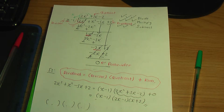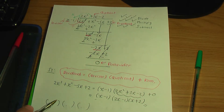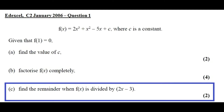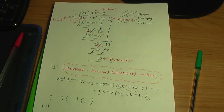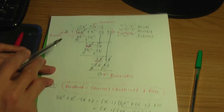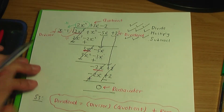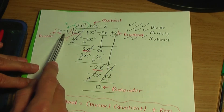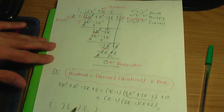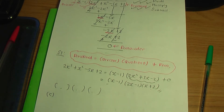If you're unfamiliar with the method, I'll provide a link to a video on this in the description below. That solves Part B. In Part C: find the remainder when f of x is divided by 2x minus 3. You can either use algebraic division or use the remainder theorem, which is quicker.